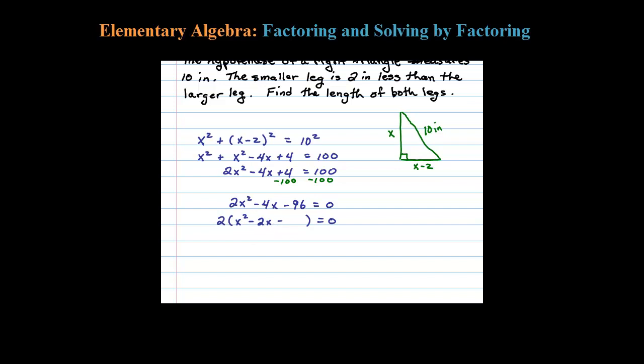Looks like it should factor. So 2 times a couple blank parentheses equals 0. We'll break up X squared as X times X. How does 48 factor to give me a 2? After a little bit of thought, it looks like 6 times 8 should do it.